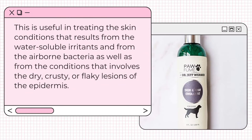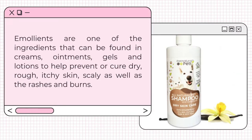Emollients are useful in treating skin conditions that result from water-soluble irritants and from airborne bacteria, as well as from conditions that involve dry, crusty, or flaky lesions of the epidermis. Emollients are one of the ingredients that can be found in creams, ointments, gels, and lotions, to help prevent or cure dry, rough, itchy, scaly skin, as well as rashes and burns.